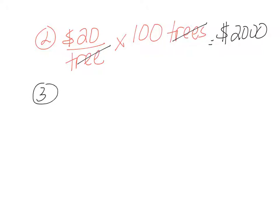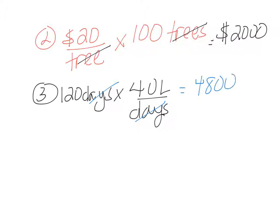Number three, each avocado tree needs 40 liters of water per day during the dry season, which is 120 days per year, and two liters of water per day in the rainy season, which is 200 days per year. The community garden must buy water from the water agency at one cent per liter. Calculate how much it will cost per year to water each tree. This is a two part problem. First, we need to solve for 120 days. It's going to take 40 liters per day for 120 days. Our days cancel out and we're going to end up with 4,800 liters.